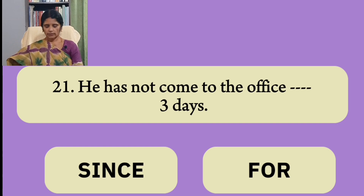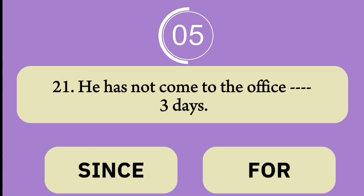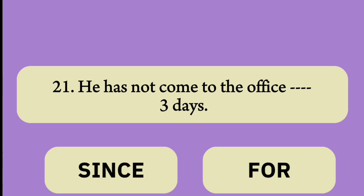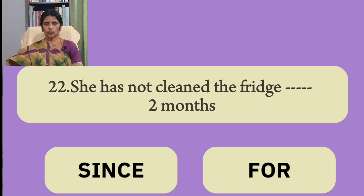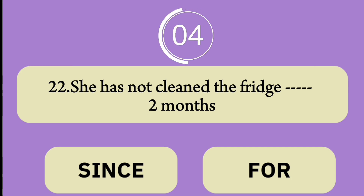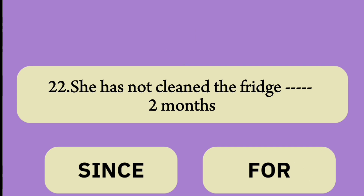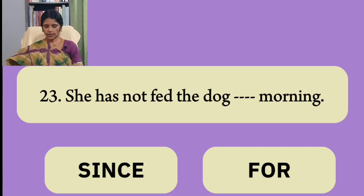Number twenty-one: 'He has not come to the office ___ three days.' Number twenty-two: 'She has not cleaned the fridge ___ two months.' Number twenty-three: 'She has not fed the dog ___ morning.'